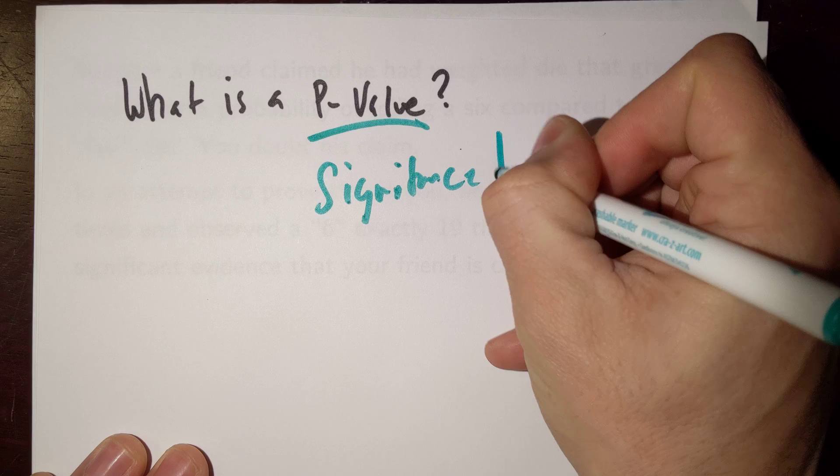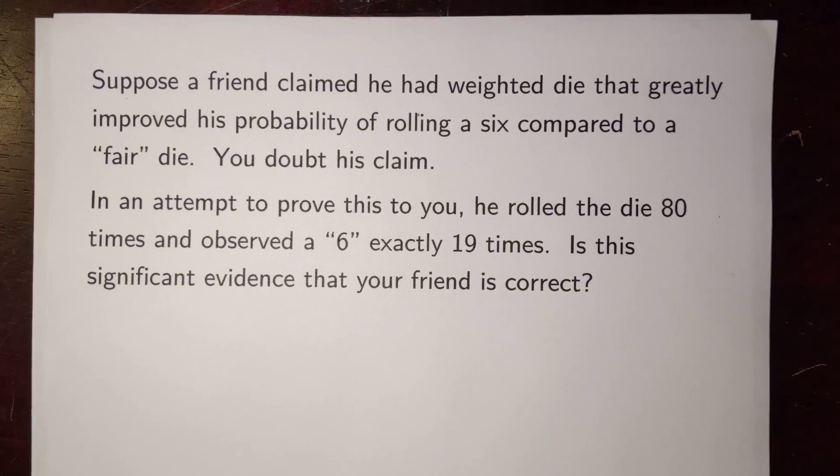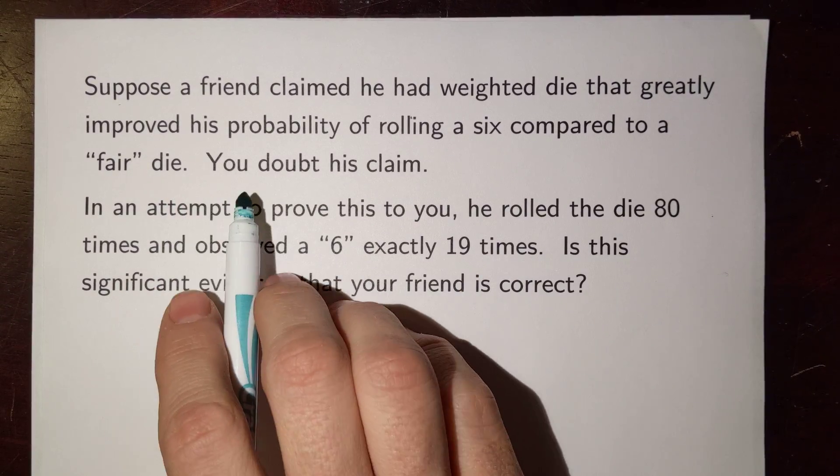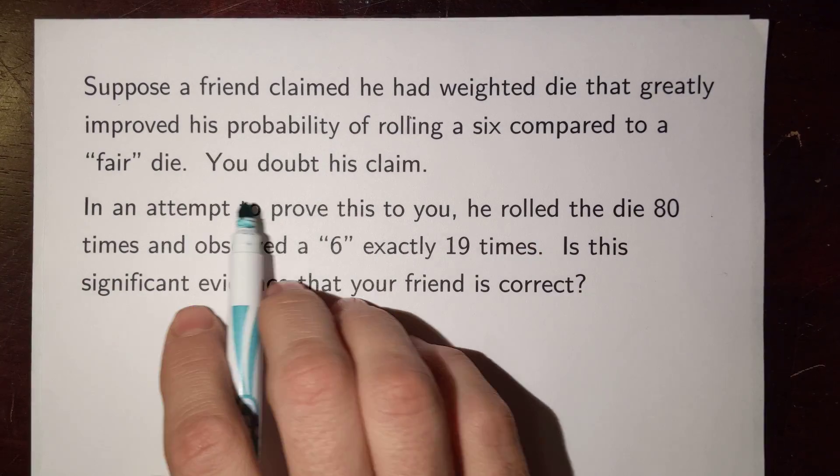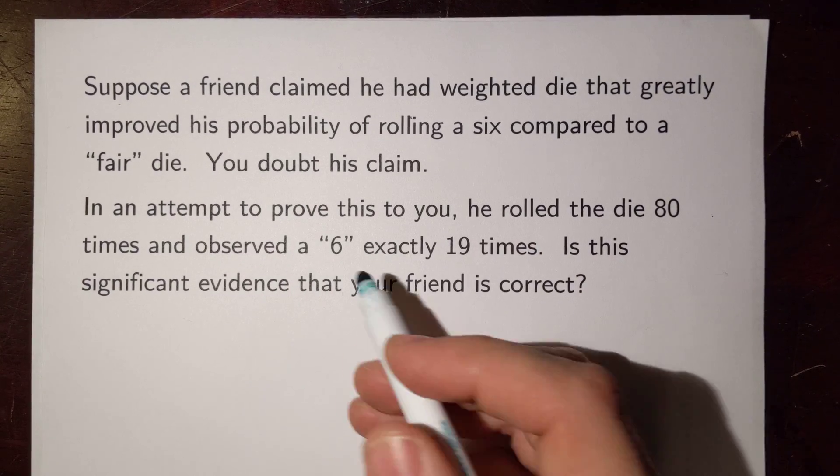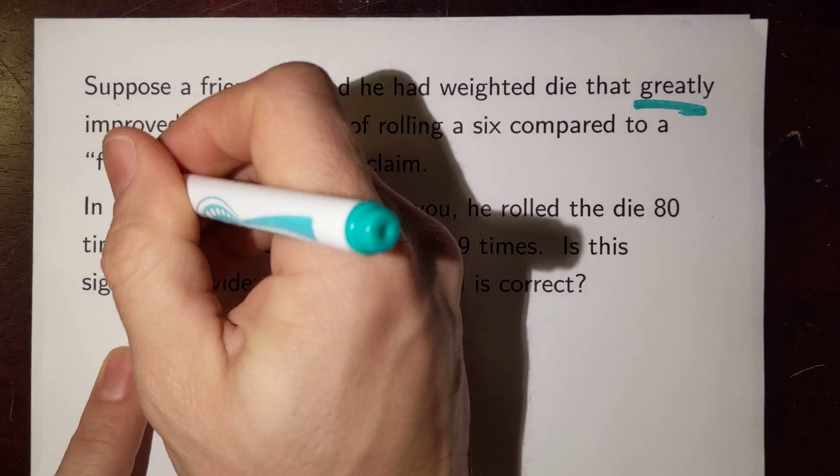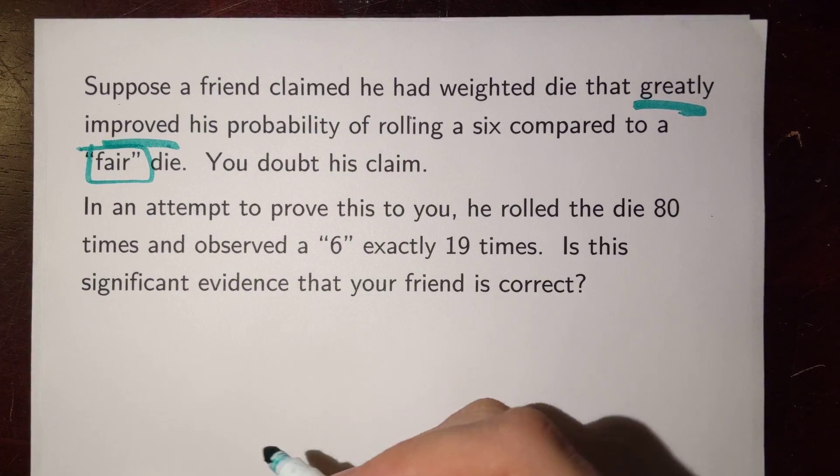And to help us think about that, let's go back to an example we saw from a previous class. Remember when we had this friend who claimed he had a weighted die that greatly improved his probability of rolling a 6 compared to a fair die? And you doubt his claim. Okay, he thought that we had this great improvement of a probability, but for us we just sort of thought that it was a fair die just like any other die we encounter.